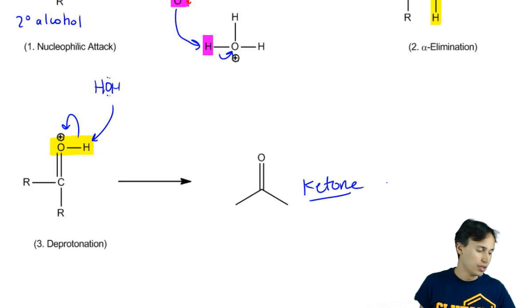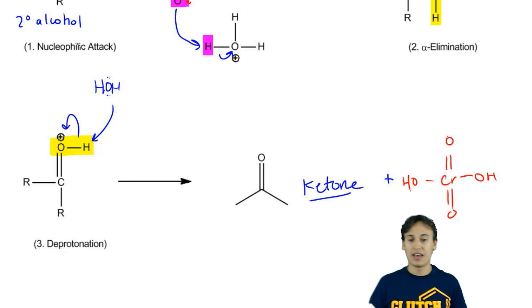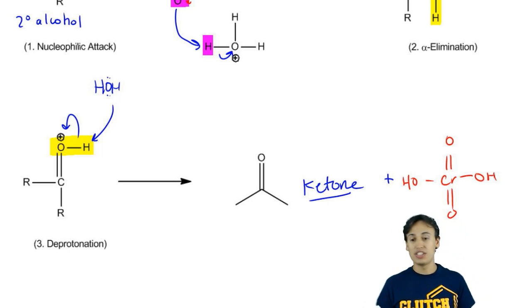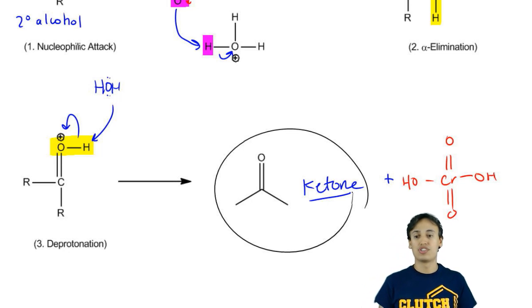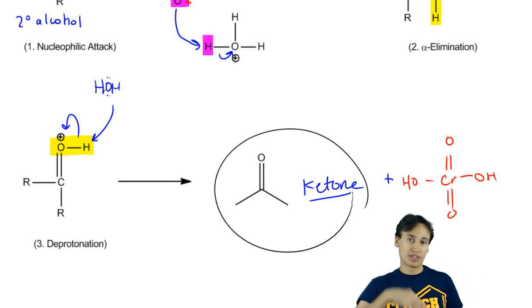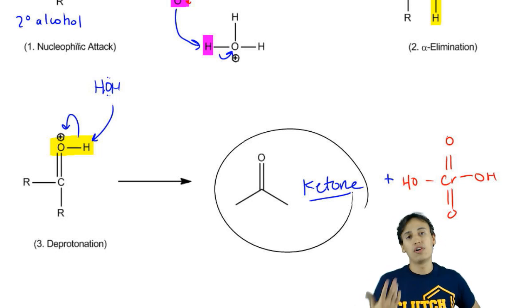You're going to get a ketone plus you'll get your chromic acid that eventually reforms. We don't really care about that because that's just the oxidizing agent. What we really need to be able to draw here is how to get to the ketone. Hopefully that helps you understand the process of oxidation a little bit better and also it introduces the concept of an alpha elimination which will come up again in other reactions.